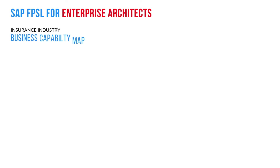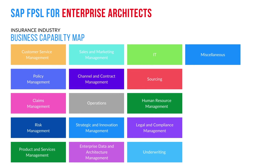If you look at the insurance industry's business capability map, there are various capabilities such as policy management, claims, risk management, and underwriting. To establish a subledger system, we need to fetch, transform, and aggregate technical bookings into subledger documents. This kind of data transformation requires good data design, a lean data model, and a process engine that can scale with data.